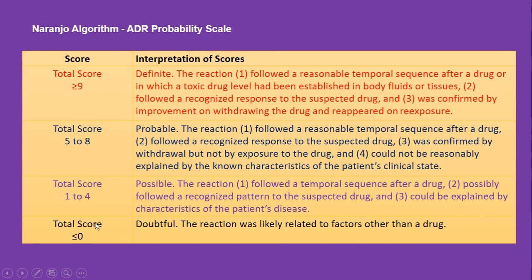To summarize the scoring: a total score of less than or equal to 0 is doubtful; 1 to 4 is possible; 5 to 8 means the suspected adverse drug reaction is probable; and a score of greater than or equal to 9 means the adverse drug reaction is definite.